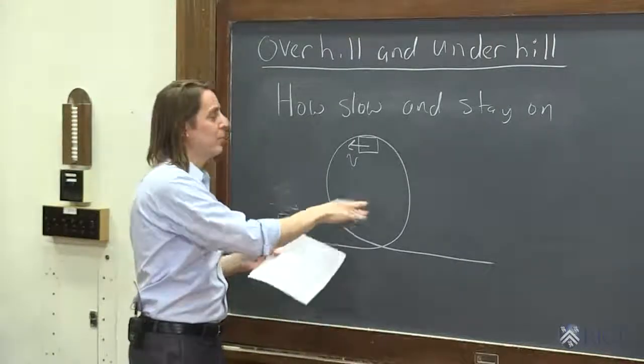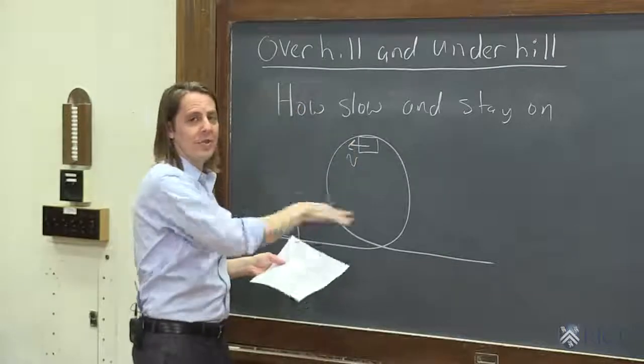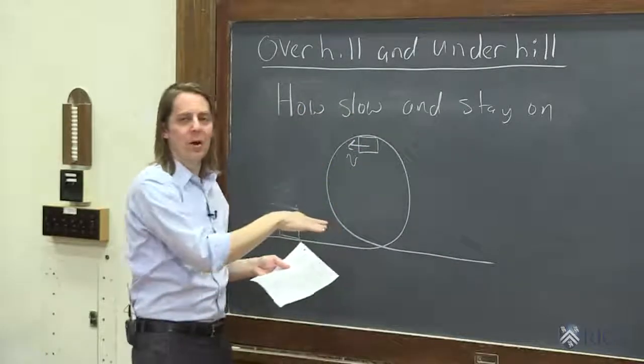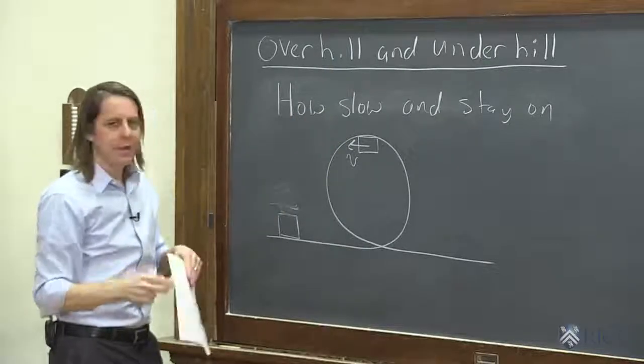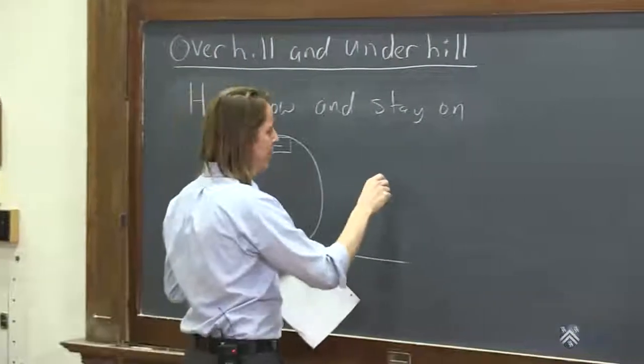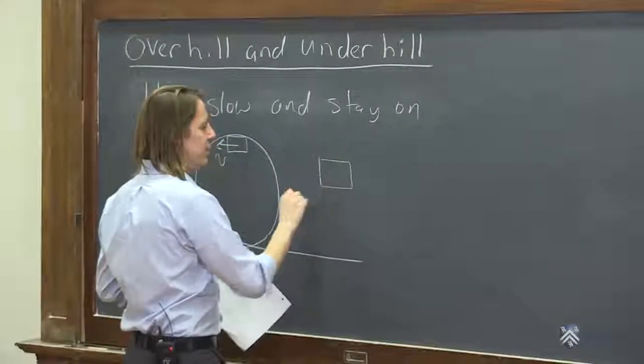How fast does it need to be going to stay on, or how slow can it go? We say how slow can it go because when it's going really fast, it'll definitely stay on. And as you slow down more and more, eventually it'll fall off. So it's really the lowest speed that you can go. So to get it, you use everything we've been learning about in this unit.